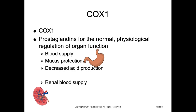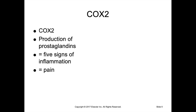COX-1 is responsible for prostaglandins that regulate normal organ function. For example, COX-1 plays a very important role in causing secretion of stomach-protective mucus, maintaining blood supply to the stomach, and decreasing stomach acid production. COX-1 also plays a role in the kidney where its prostaglandins counteract vasoconstriction and allow vasodilation of renal blood supply. Overall, COX-1 prostaglandins are generally beneficial, providing protection against gastritis and gastric ulcers.